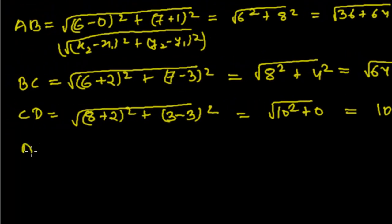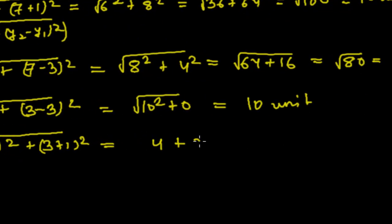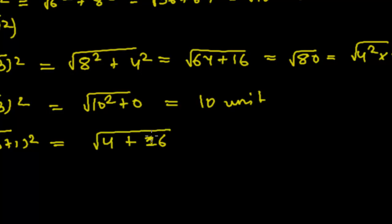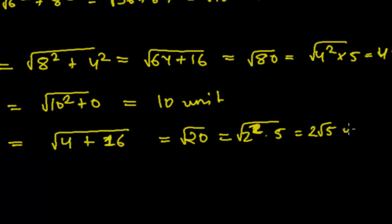Now let's find AC. Difference of x-coordinates: (-2 - 0)², plus difference of y-coordinates: (3 - (-1)) = 4, squared. So √((-2)² + 4²) = √(4 + 16) = √20 = √(4 × 5) = 2√5 units. We get AC = 2√5 units.